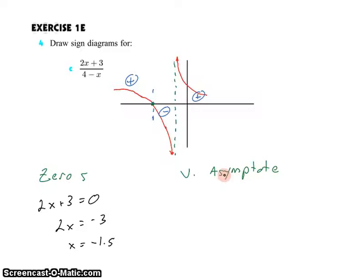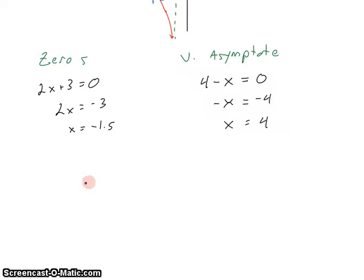How do we get a vertical asymptote? We get a vertical asymptote when we divide by zero. So we're going to look at the denominator and find what value of x makes the denominator zero. When is 4 take x equal to zero? Let's subtract the 4 to the other side and multiply by negative 1. It happens when x is 4. So the relationship can only change from positive to negative or negative to positive at these values of x, negative 1.5 and 4. So that's going to help us make our sign diagram.